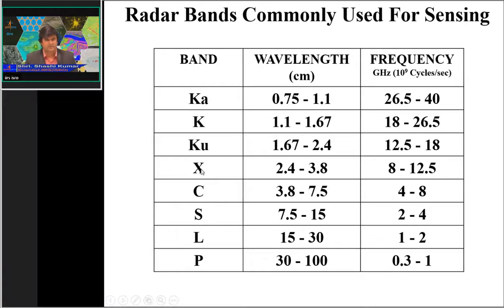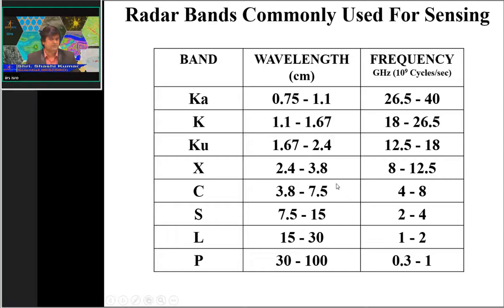Several satellites are available in C-band, including ERS, ENVISAT, RADARSAT, and RISAT, with mean wavelength of 5.4 to 5.6 cm and total range of 3.8 to 7.5 cm. Currently there is no spaceborne SAR sensor in S-band, but NASA and ISRO plan to launch an S-band sensor under the NISAR mission. In L-band, JERS, ALOS-1, and ALOS-2 operate with wavelength range of 15 to 30 cm.